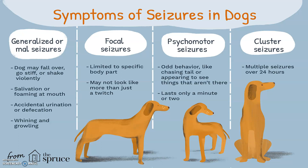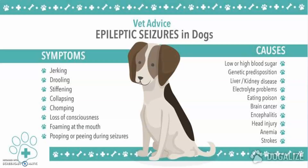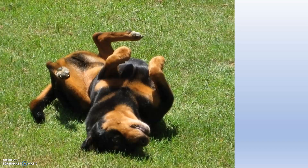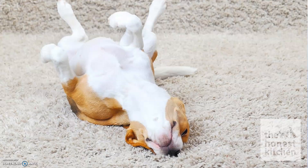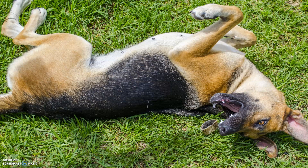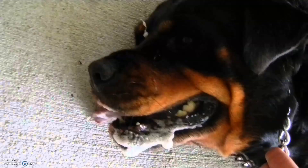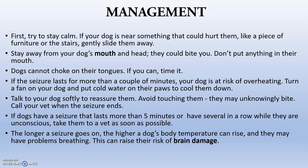The main types of seizures in dogs are focal seizures, psychomotor seizures, cluster seizures, and generalized seizures. You can observe dogs having small epileptic paddling movements and foaming at the mouth during an epileptic episode.